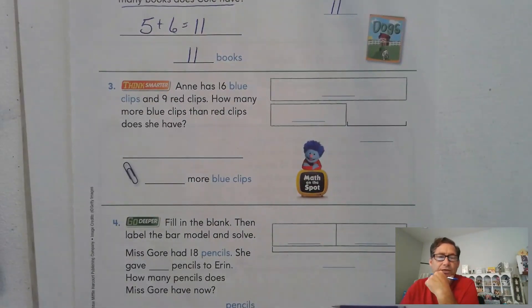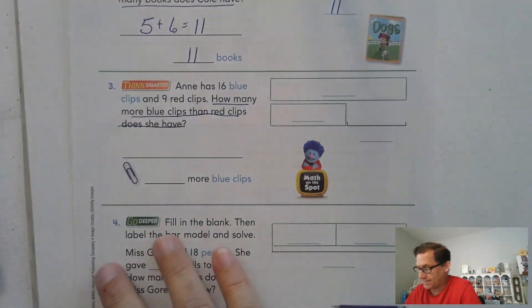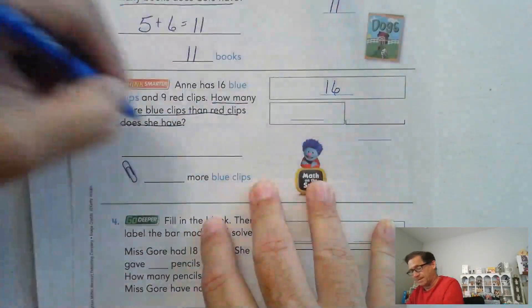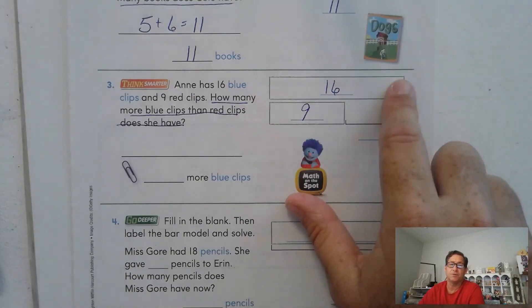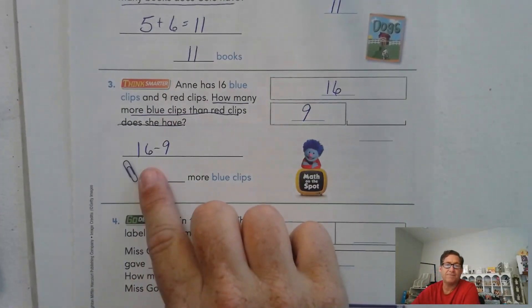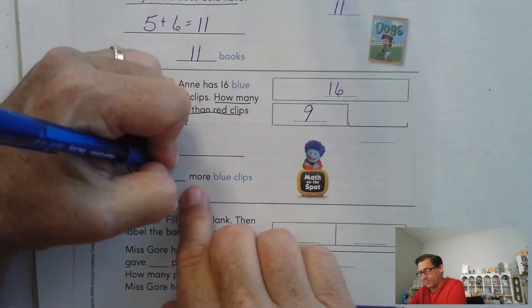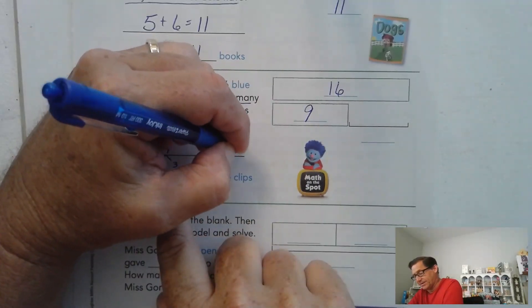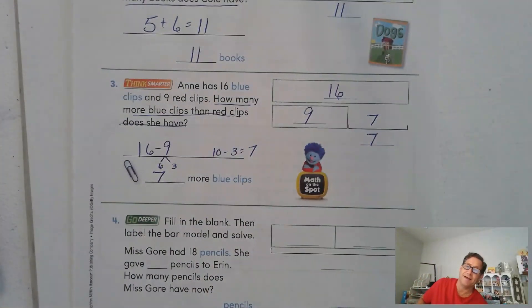Han has 16 blue clips and 9 red clips. How many more blue clips than red clips does she have? So the longer bar represents the blue clips. And she has 9 red clips. We have to find out how much longer the blue clip is than the red clip. And to do that, we're going to subtract. All right. What do we have to subtract from 16 to get a 10? We have to subtract 6. So 6 and 3 make up 9, right? 16 minus 6 is 10. 10 minus 3 is 7. So she has 7 more blue clips than red clips.